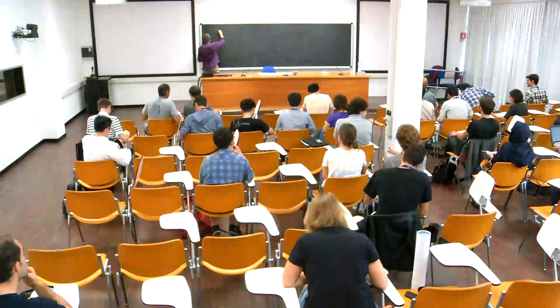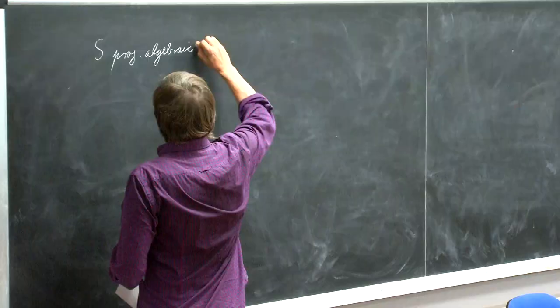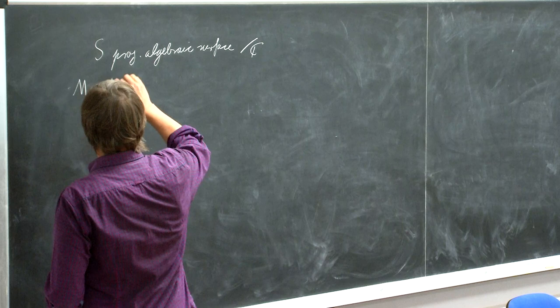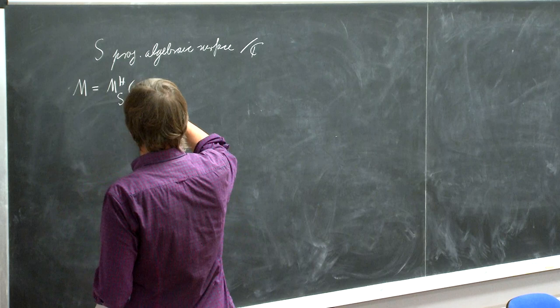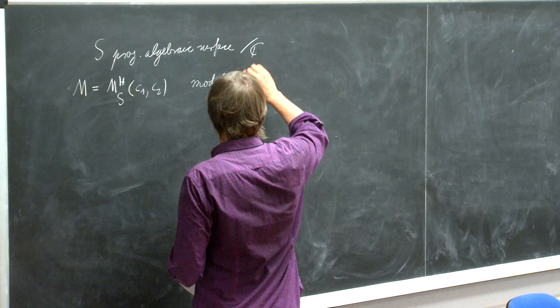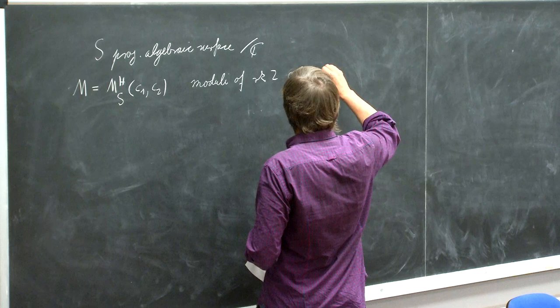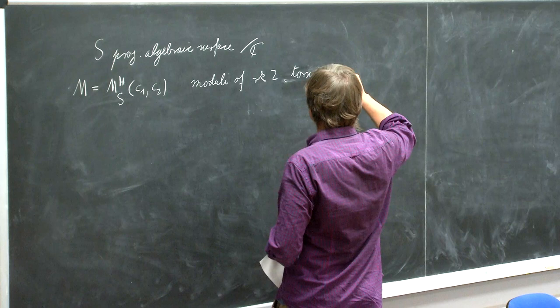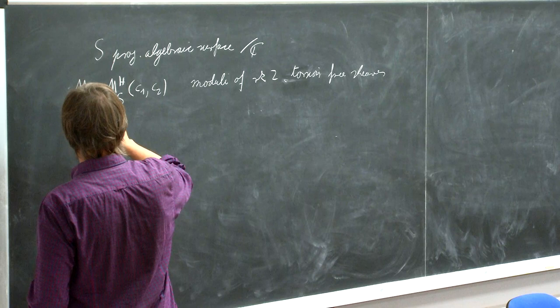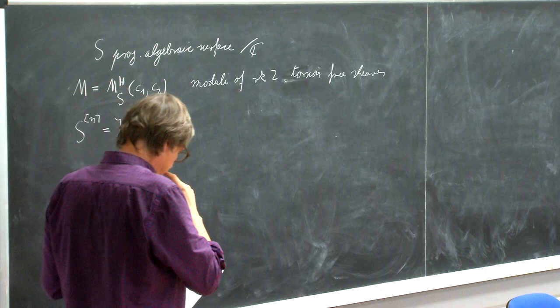We had S for the projective algebraic surface over the complex numbers. We were considering the moduli space of H-stable rank 2 coherent sheaves on S with Chern classes C1 and C2 — torsion free sheaves with these Chern classes. I also introduced the Hilbert scheme of points S^n, equal to Hilbert S, which parametrizes two-dimensional sub-schemes.